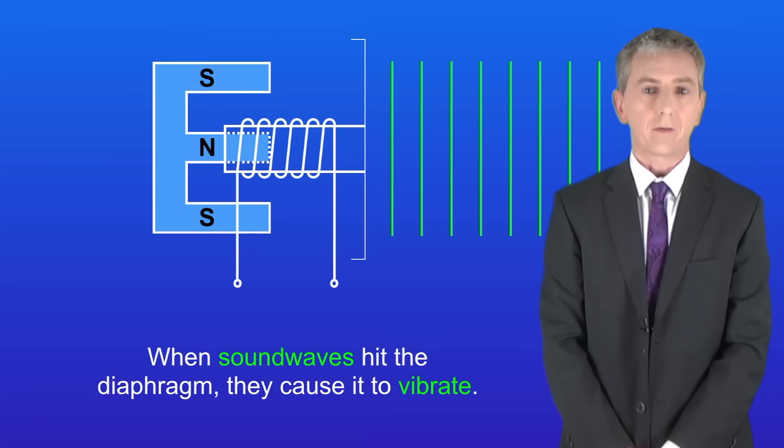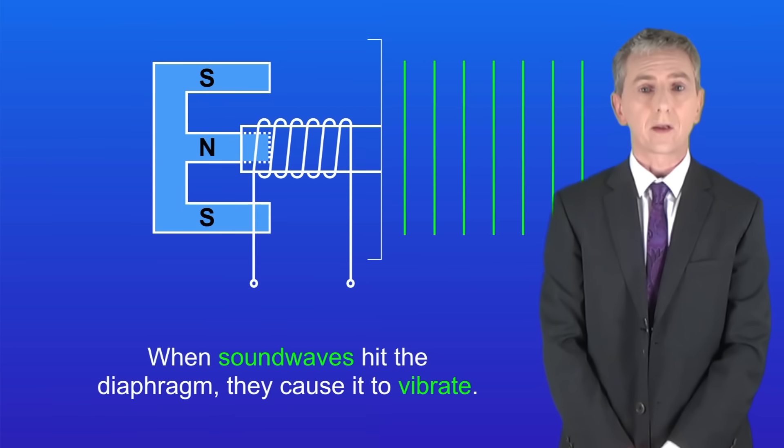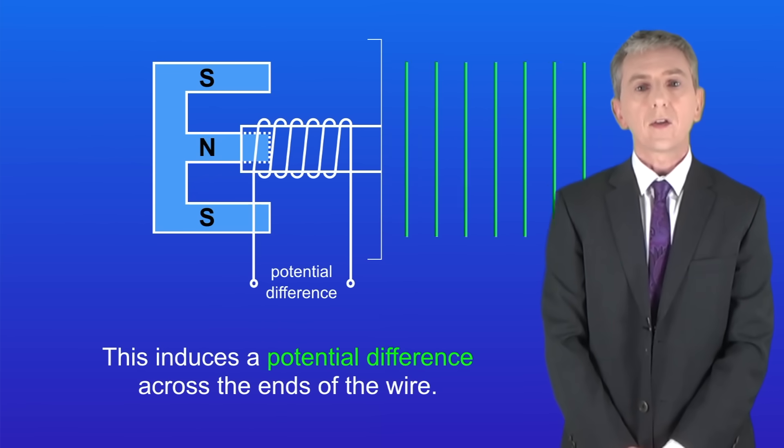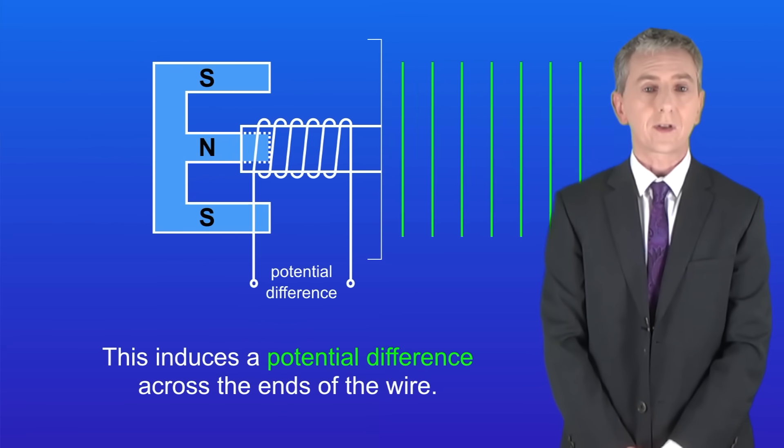When sound waves hit the diaphragm they cause it to vibrate like this. Now the coil of wire moves in and out through the magnetic field. This induces a potential difference across the ends of the wire.